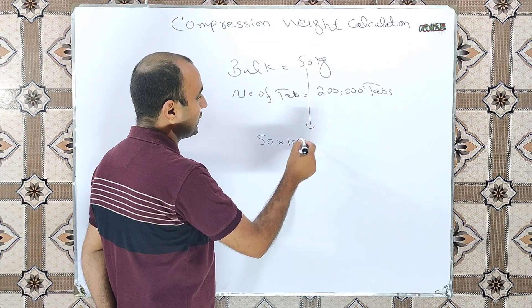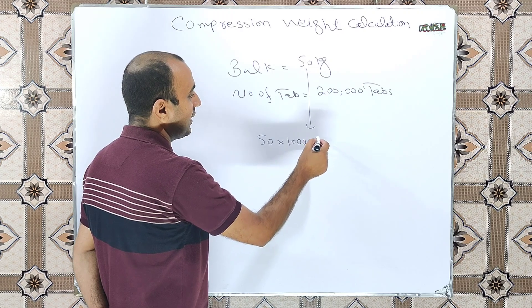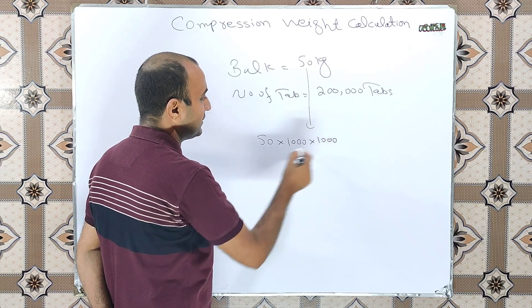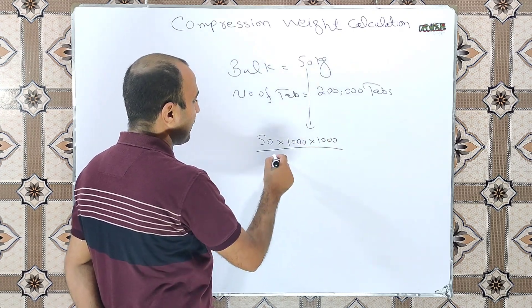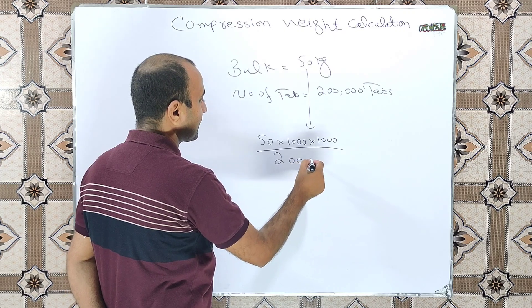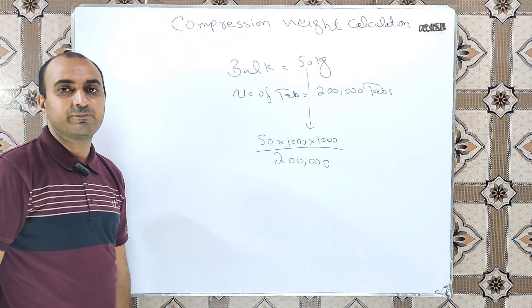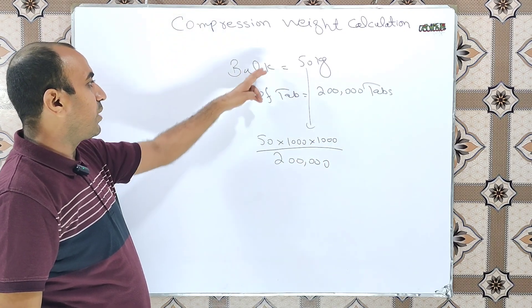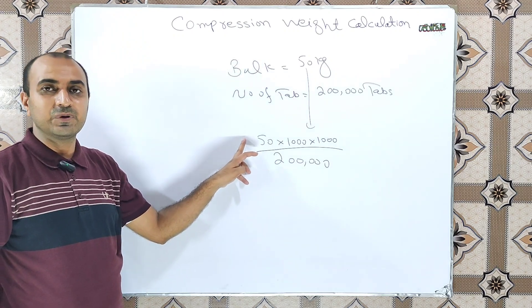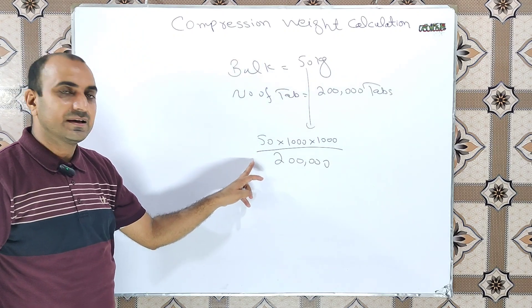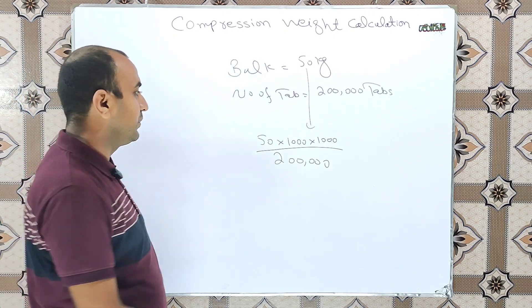we will simply multiply it with 1000 and then again with 1000 and divide it with the batch size, meaning the simple formula is quantity of the bulk in milligrams divided by the batch size in numbers.